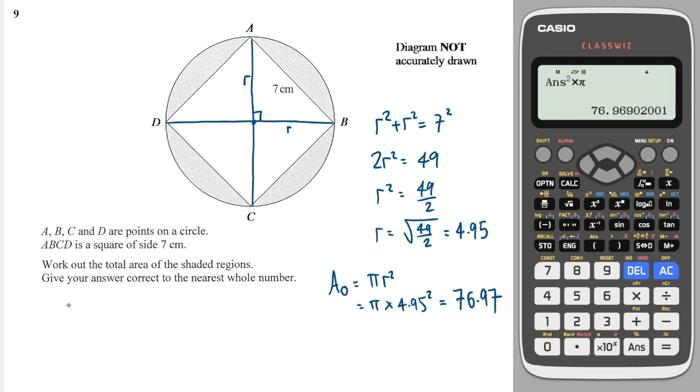And I can also work out the area of the square, which is quite straightforward because it's a square and each side is 7, so it's just 7 by 7, which is 49.